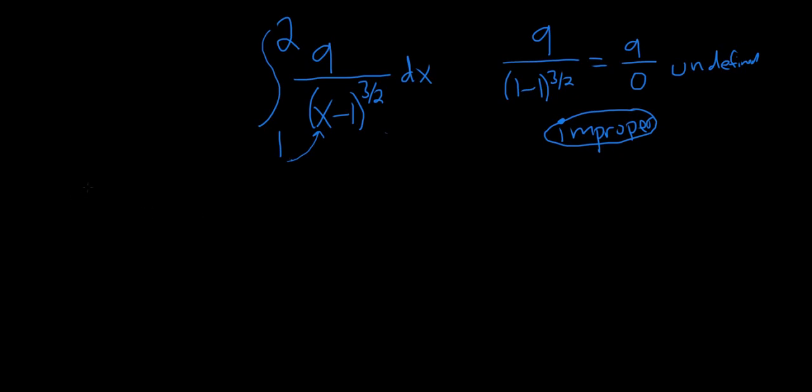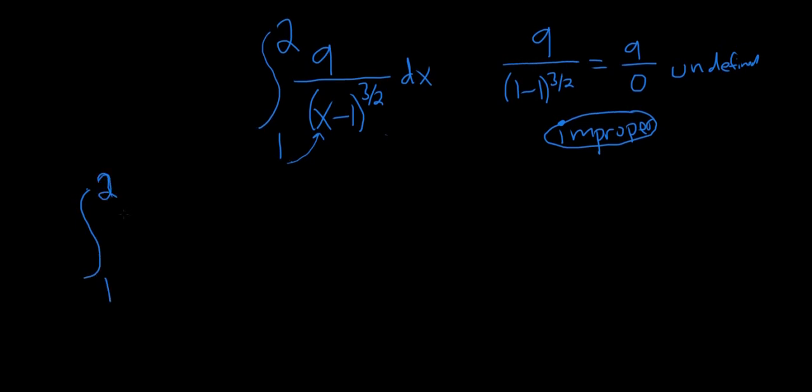So to work it out, what we do is we rewrite the original question, go from 1 to 2, 9 over x minus 1 to the 3 halves dx, and we replace the problem with a variable. So the problem is at 1, so we'll put a variable there. I like to use b, and then you take the limit as b approaches what you replaced. So we replace the 1, so we take the limit as b approaches 1.